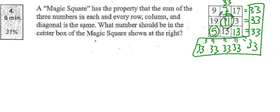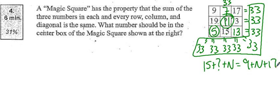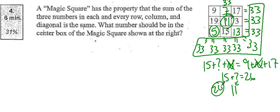So again, we can say: 15 plus what, plus n equals 9 plus n plus 17. The n's cancel each other out. So 15 plus what equals 26. We know that this then has to be 11 to make this side worth 26. That's how I got the 11.